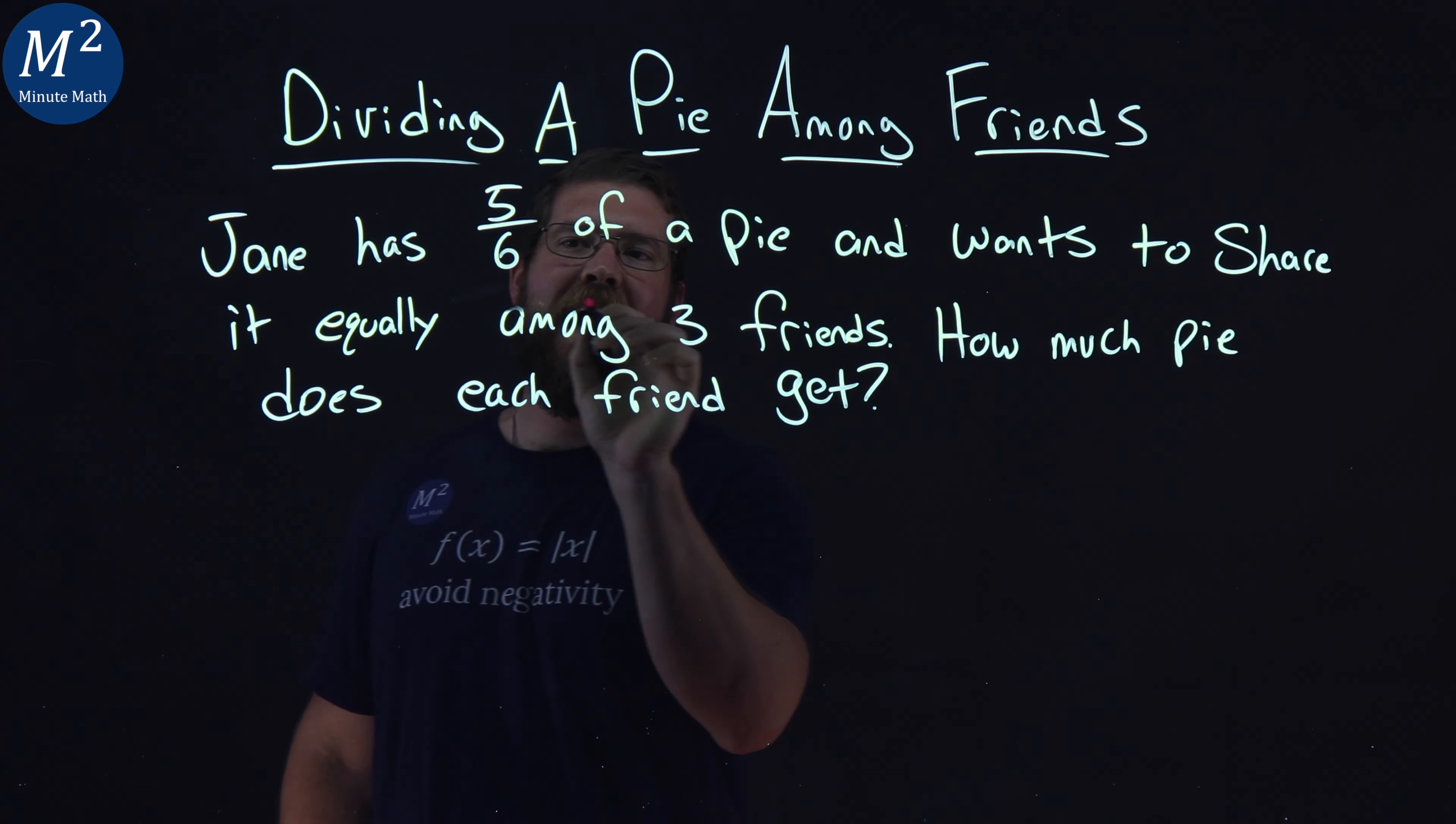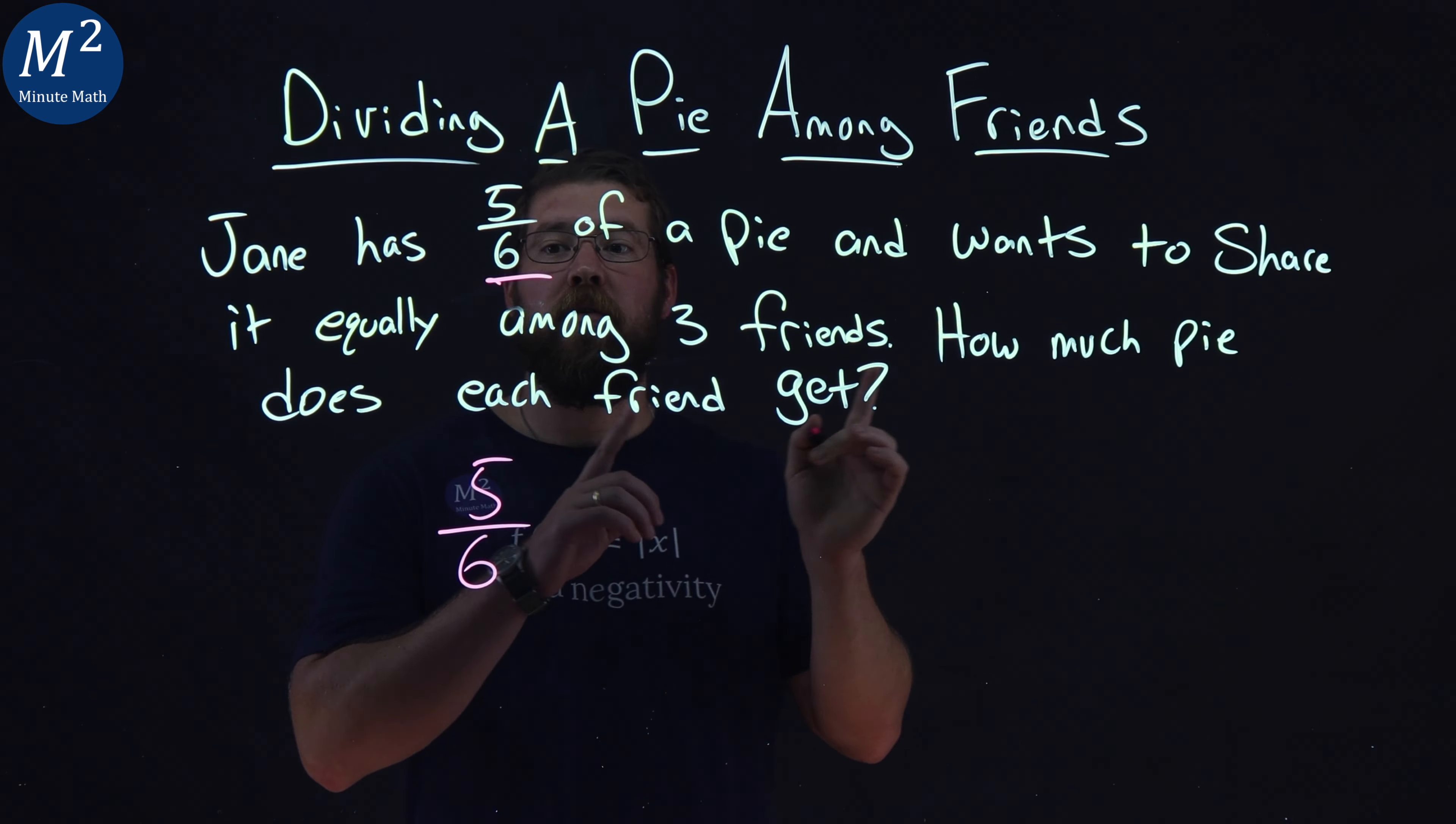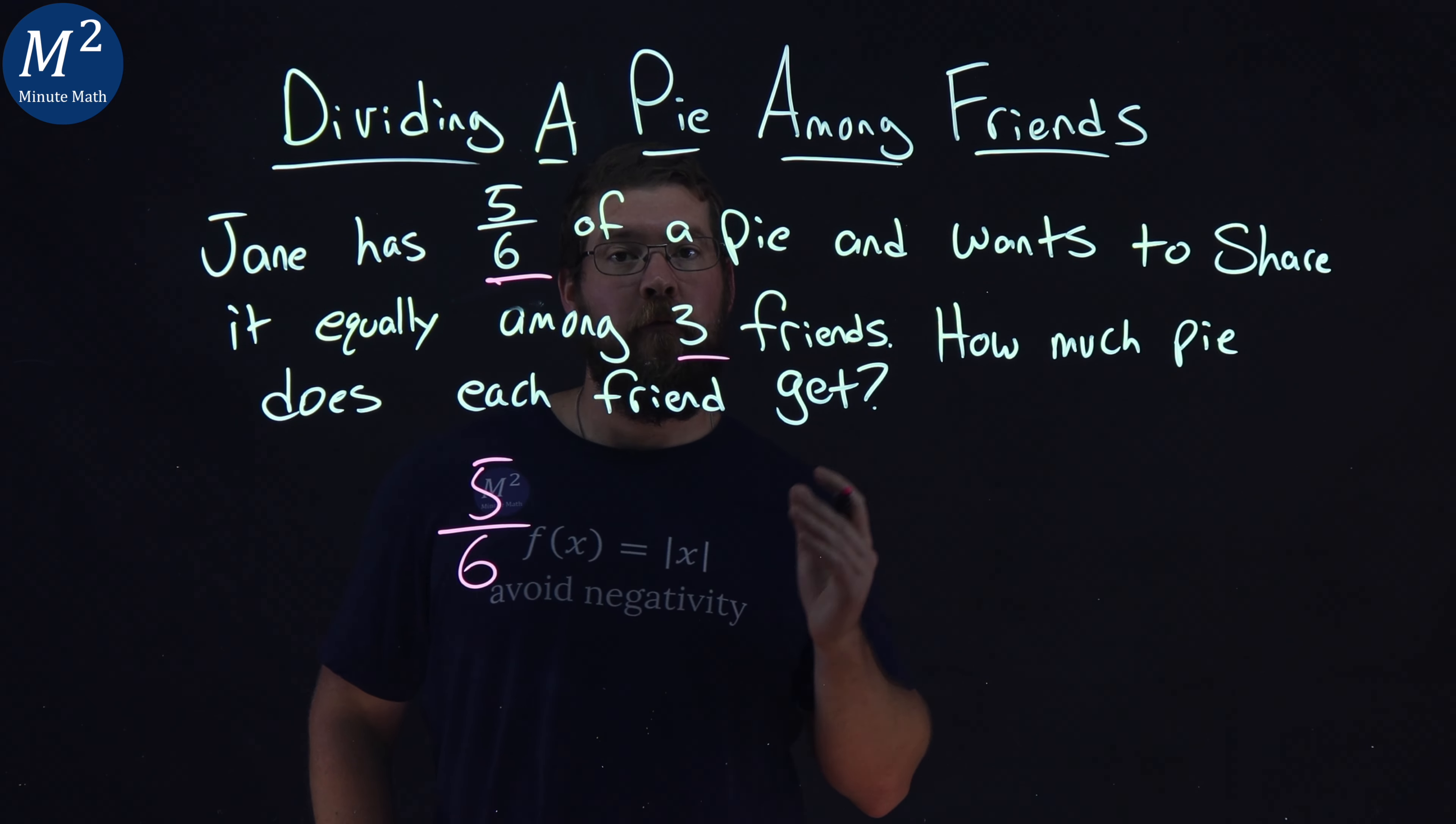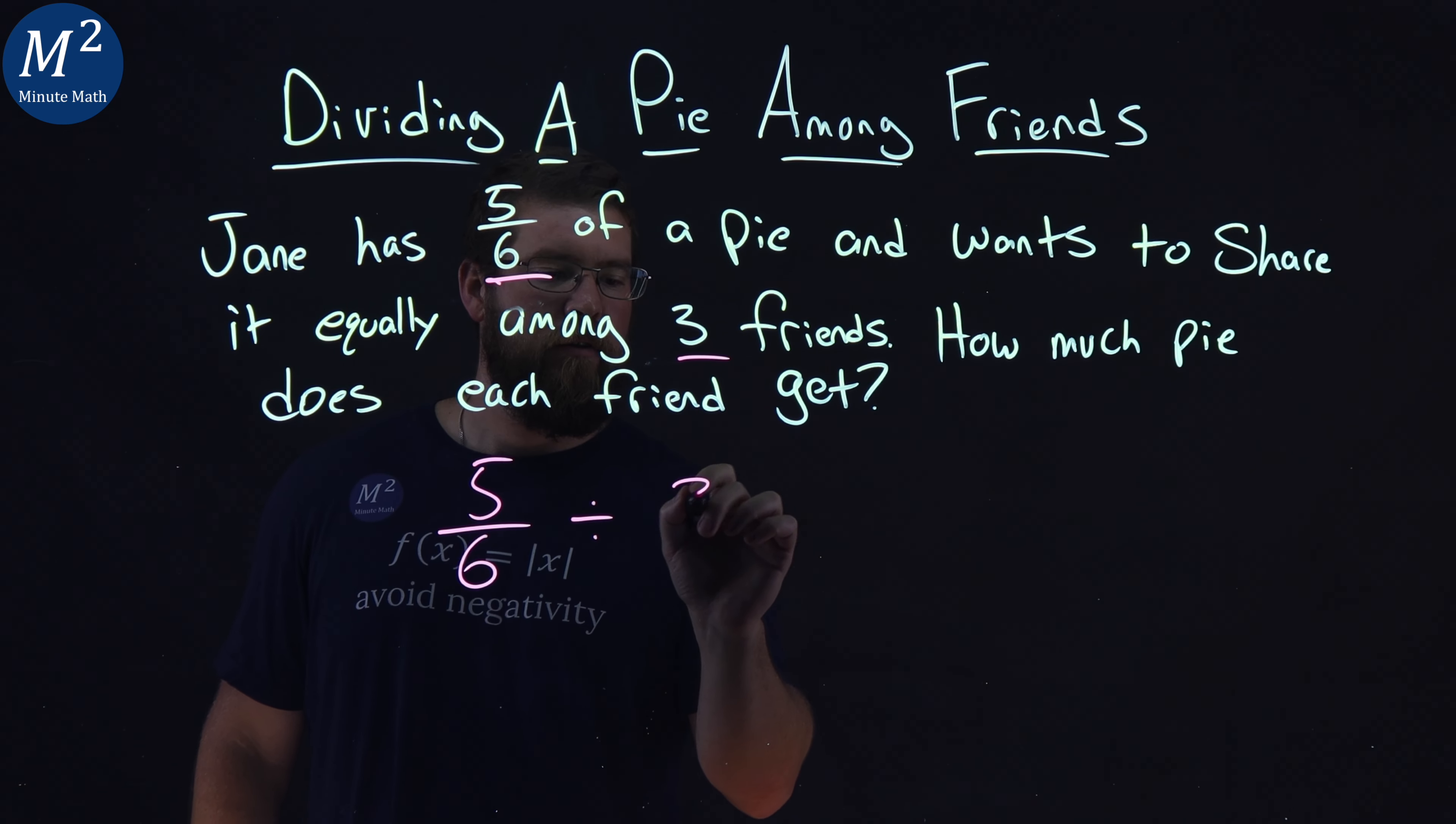So Jane has five-sixths of a pie and wants to share it equally among three friends. We're dividing by three here.